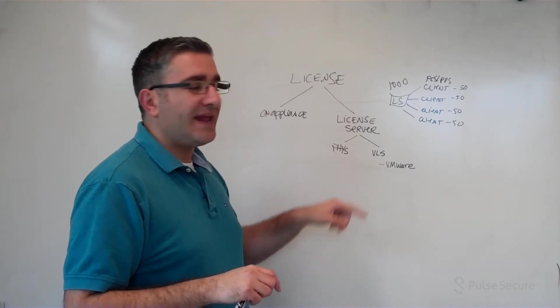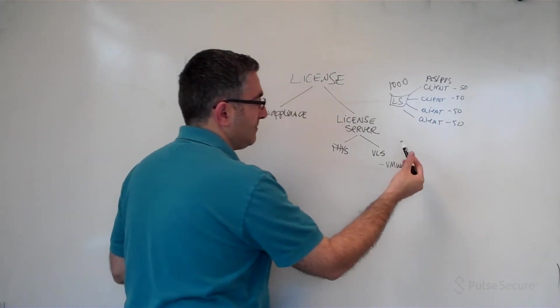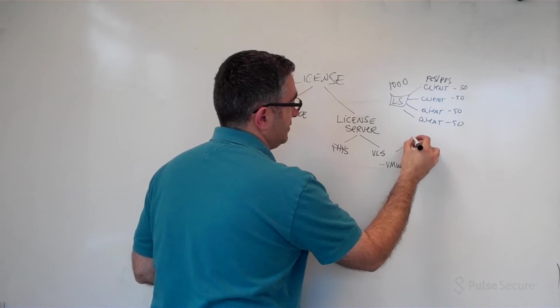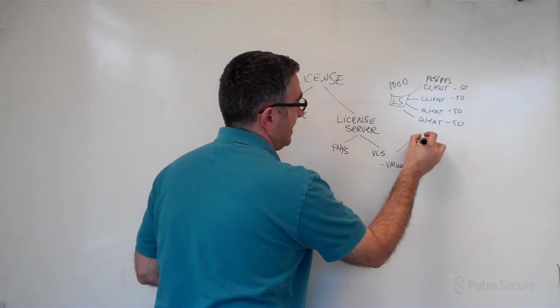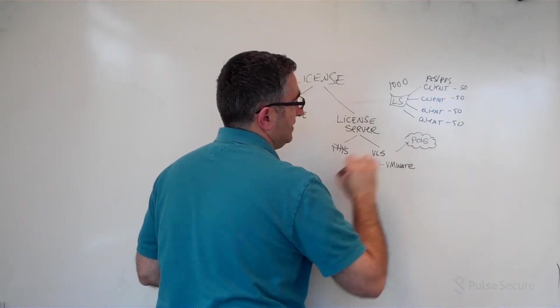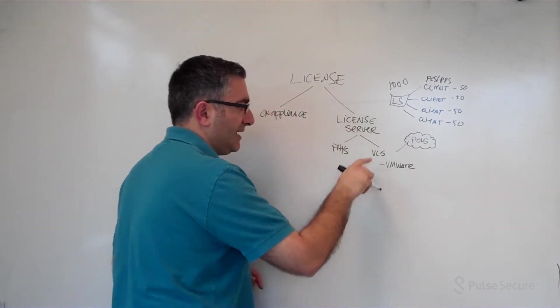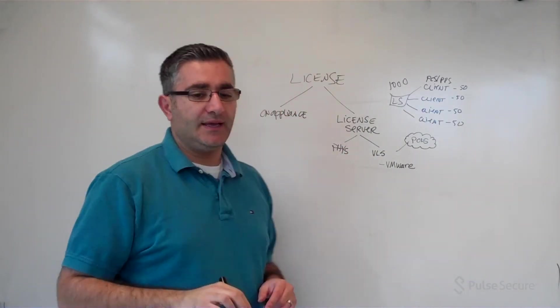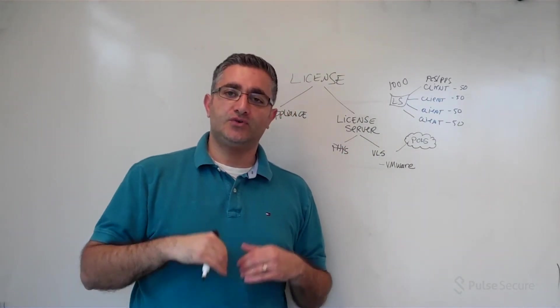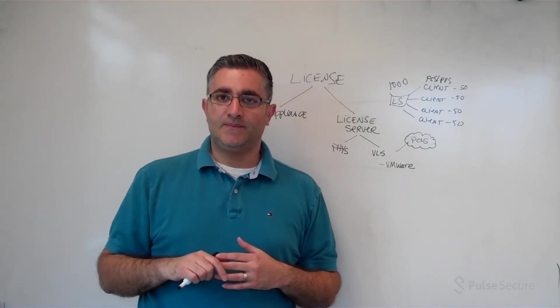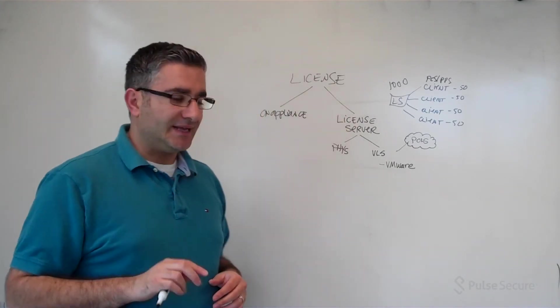Once that actually happens, VLS talks to something called Pickles, and that's something that's based in the cloud. So VLS needs to be cloud-aware, and it talks to that just to ensure that it's a virtual license server and it's trying to pull licenses.